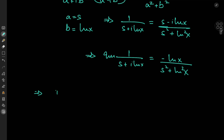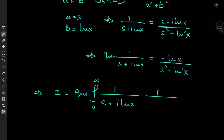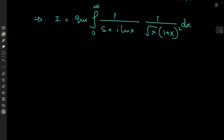This implies that the target integral I equals the imaginary part of the integral from 0 to infinity of 1 by (s + i·log x) times 1 by root x times 1 by (1 + x²) dx. And yes, this still looks pretty complicated — but that's the whole fun of things.